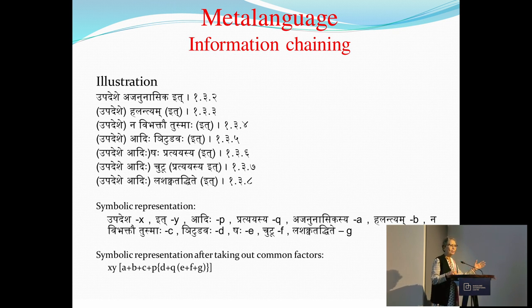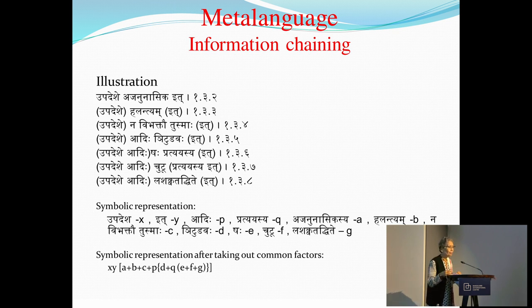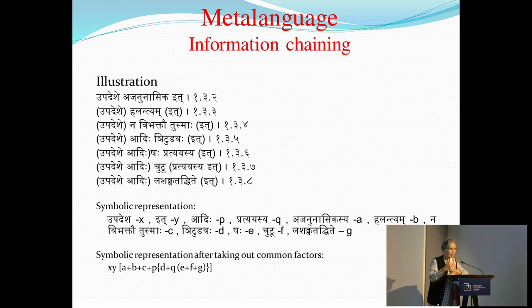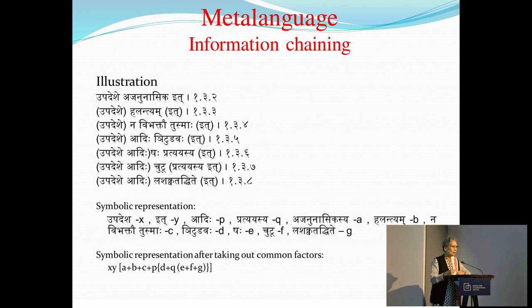Whichever sutra you read, the whole Ashtadhyayi is just one type of sentence: A is B, and nothing beyond that. He gives at most one condition, environment, and some kind of modifier like 'va' — optionally or obligatorily — or he mentions in which condition. The word 'sutra' itself means thread, and just as flowers are strewn on a thread, similarly the Ashtadhyayi is a long sutra.